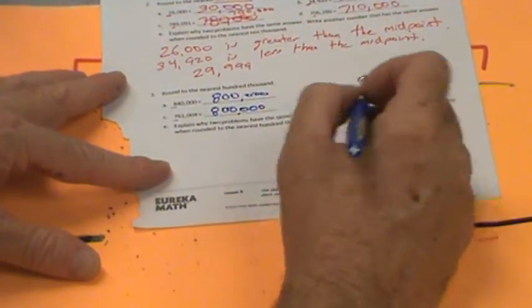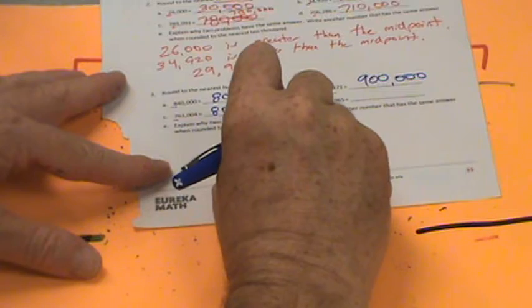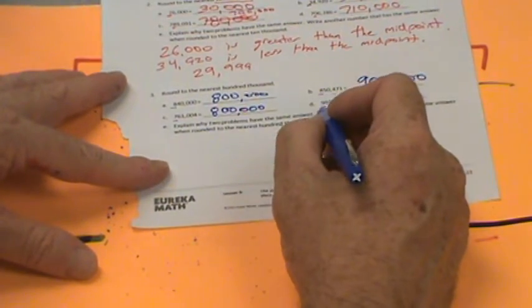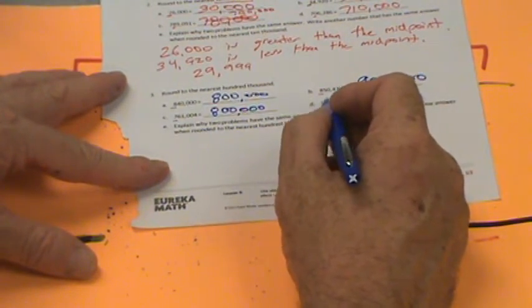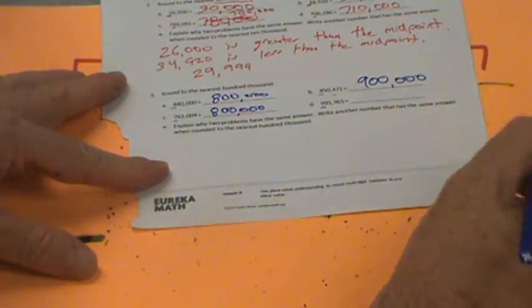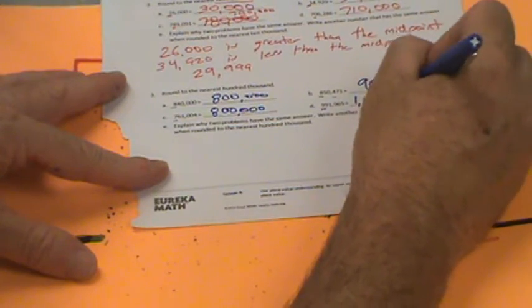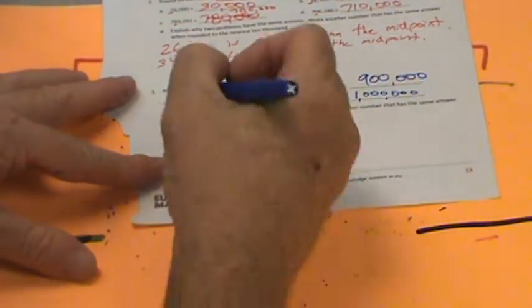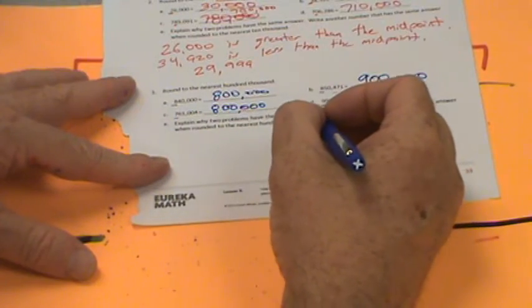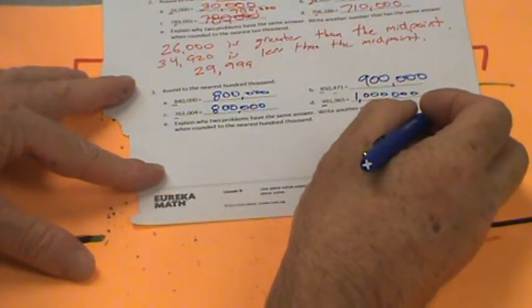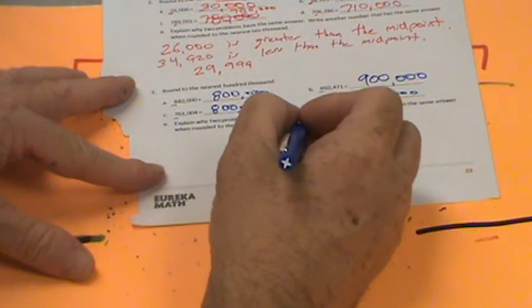Let's go over here. 991,965. This is 91 away from 900,000, but only 9,000 away from what number? Well, think about 9, go up 1, it'd be 10, and that would be 1,000,000. Explain why two problems have the same answer. Write another number that has the same answer when rounded to the nearest 100,000. I'm not going to do that. I think we've done that enough. So let's go ahead and flip the paper over because I'd like to get to some of these word problems.